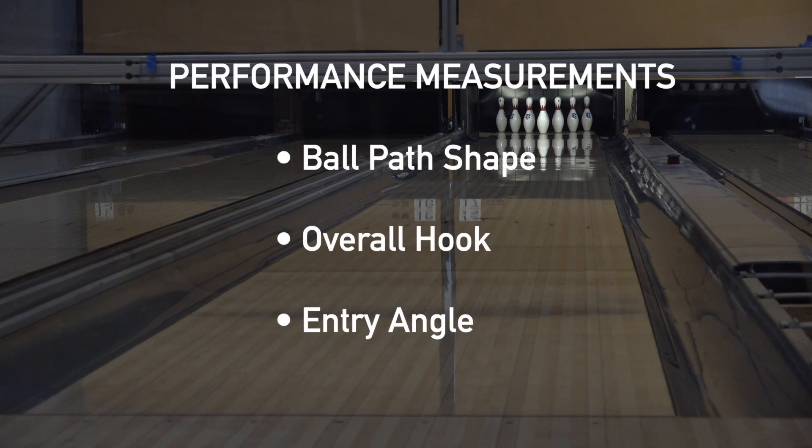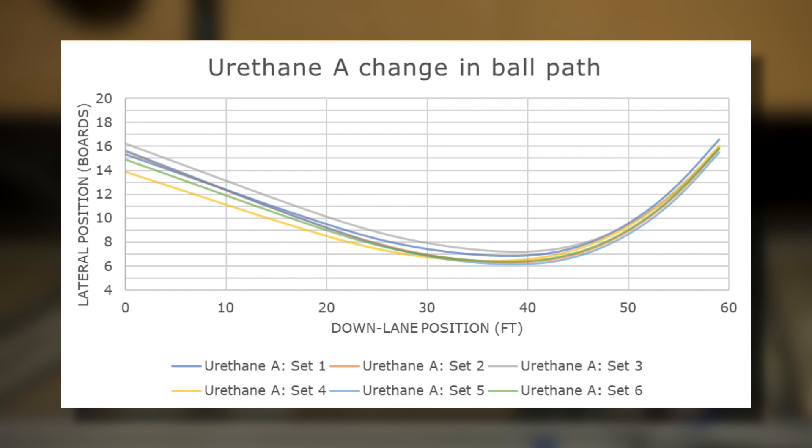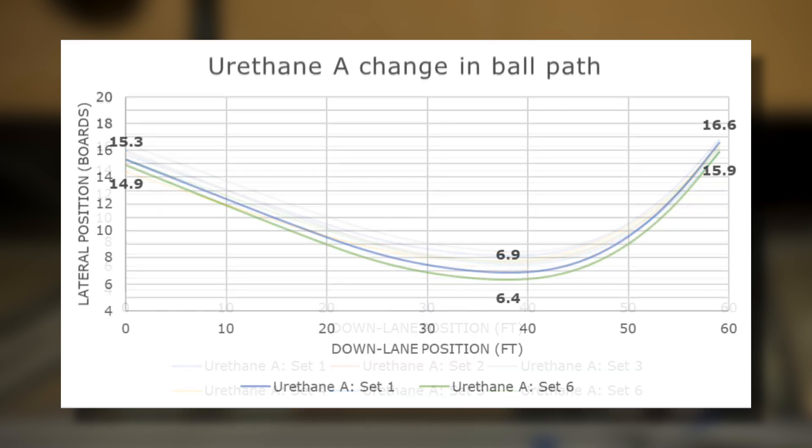To measure the impact on performance, the two bowling ball types were evaluated on ball path shape, overall hook, and entry angle throughout the tests. This chart shows the average ball path shape for all three samples of ball A. If we compare the ball path shape of the first and sixth sets, we see little difference despite the 3.8 points of hardness lost.